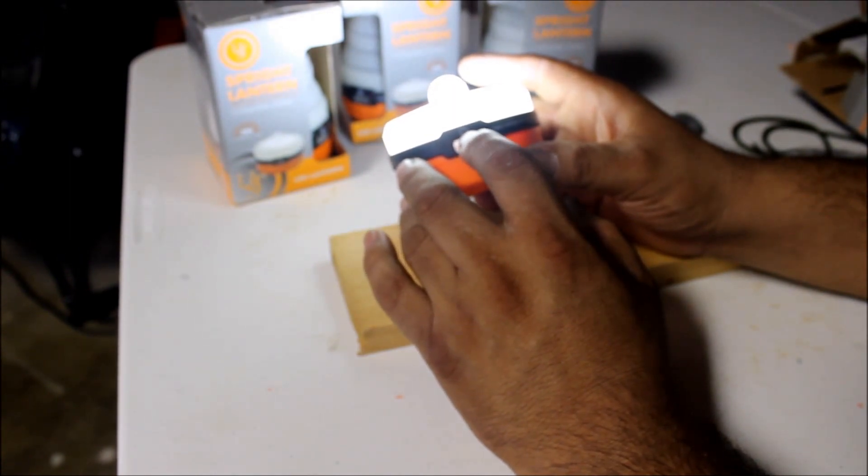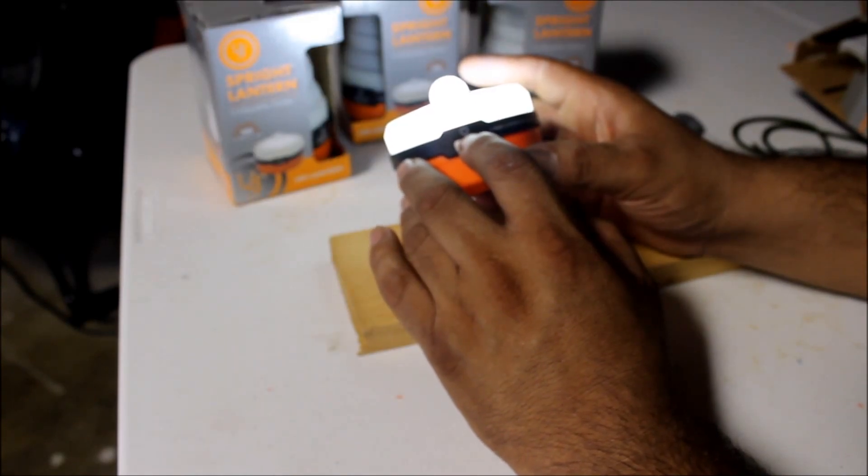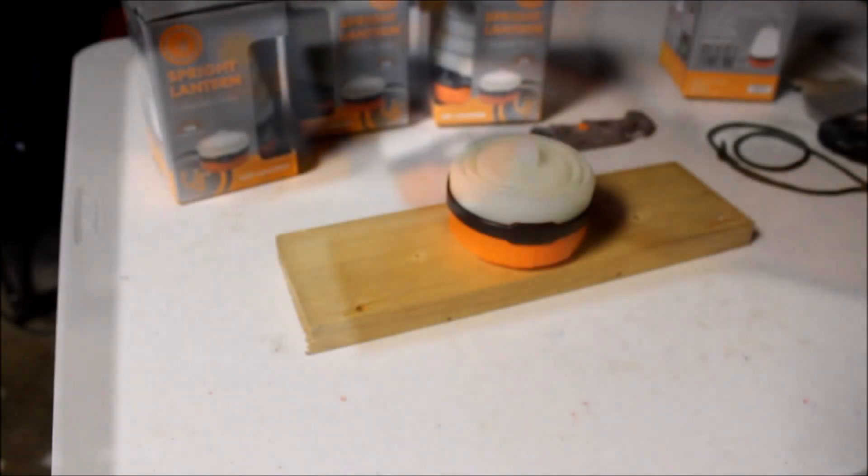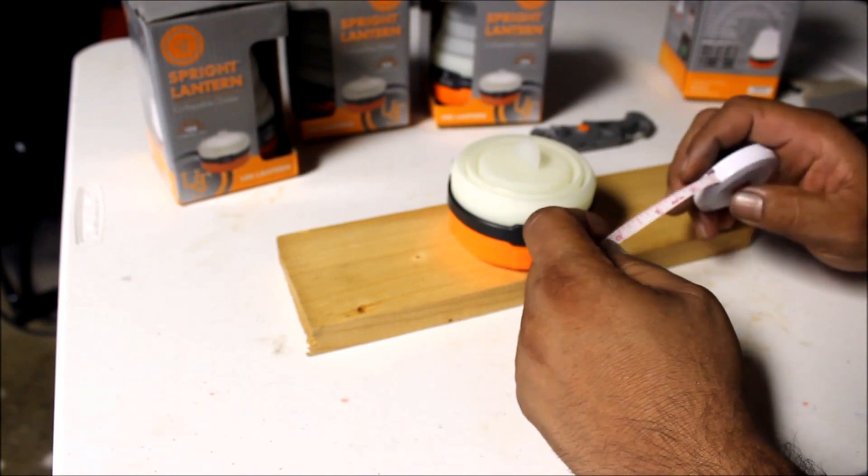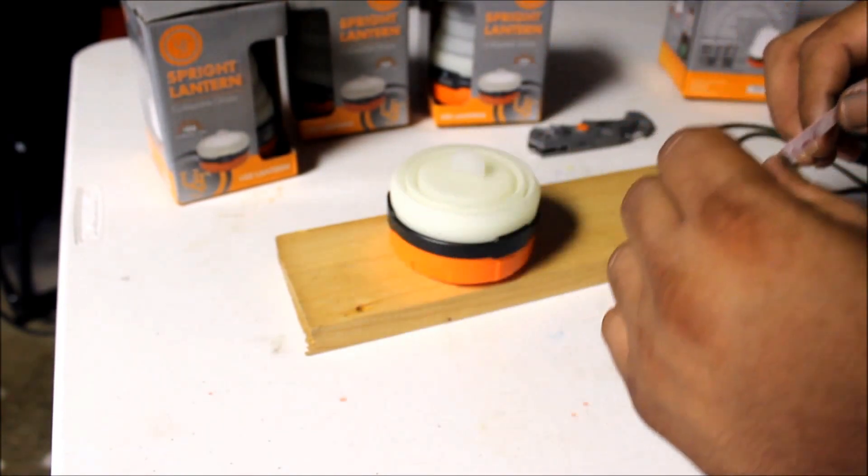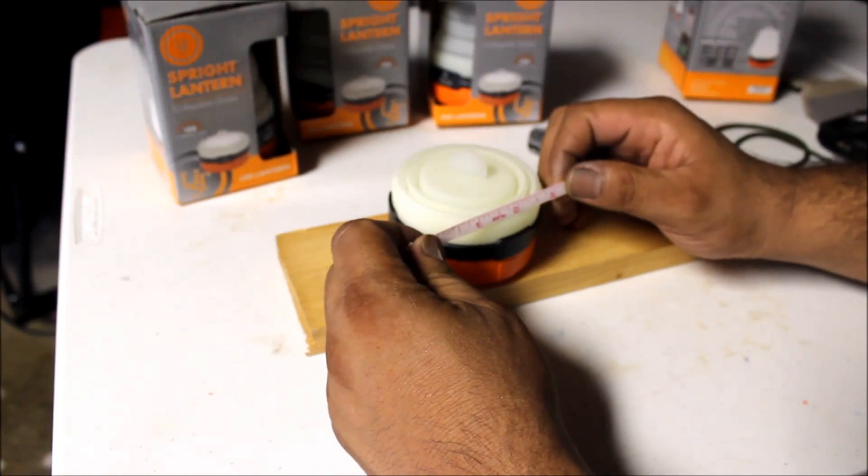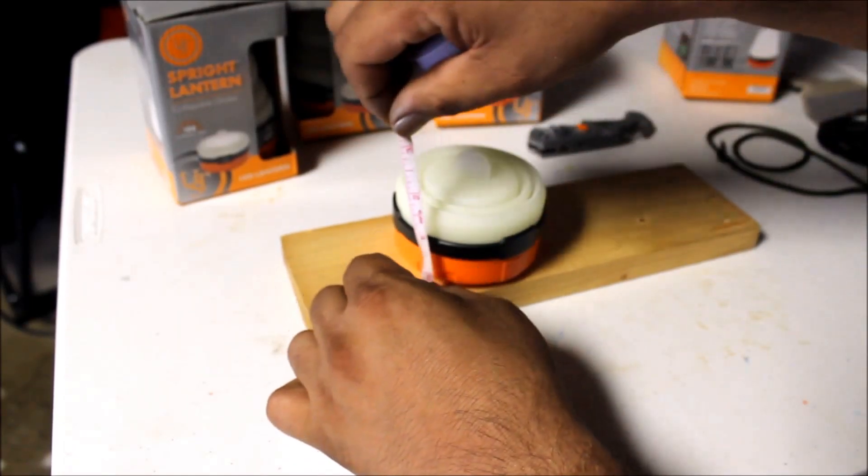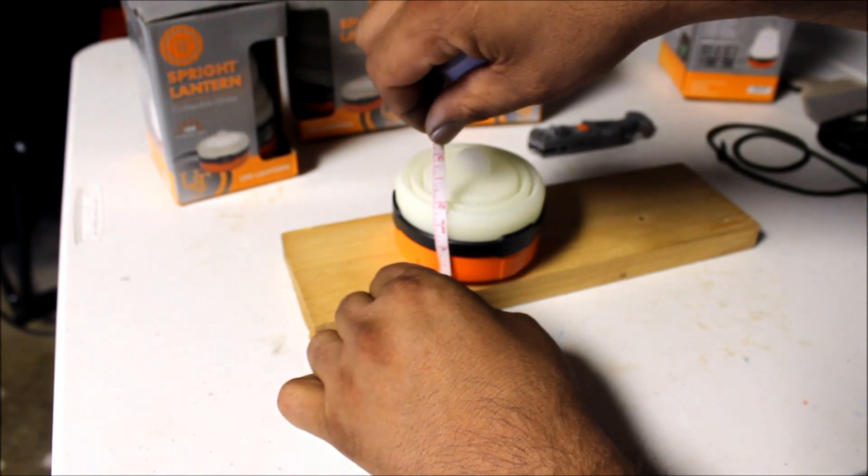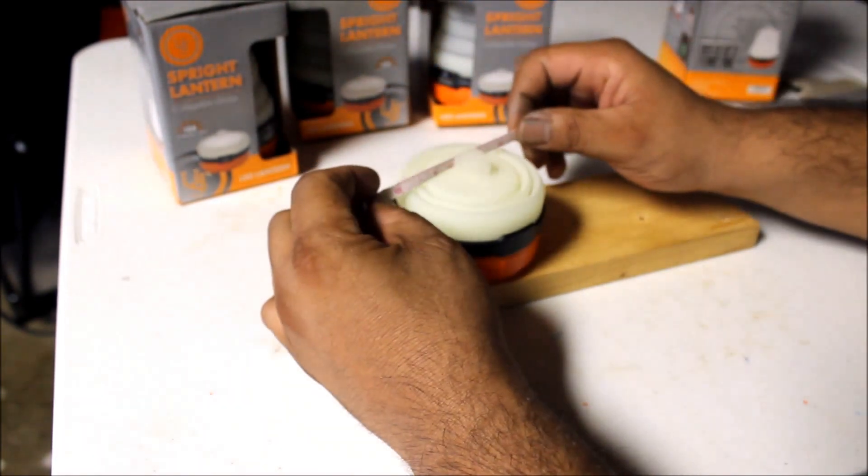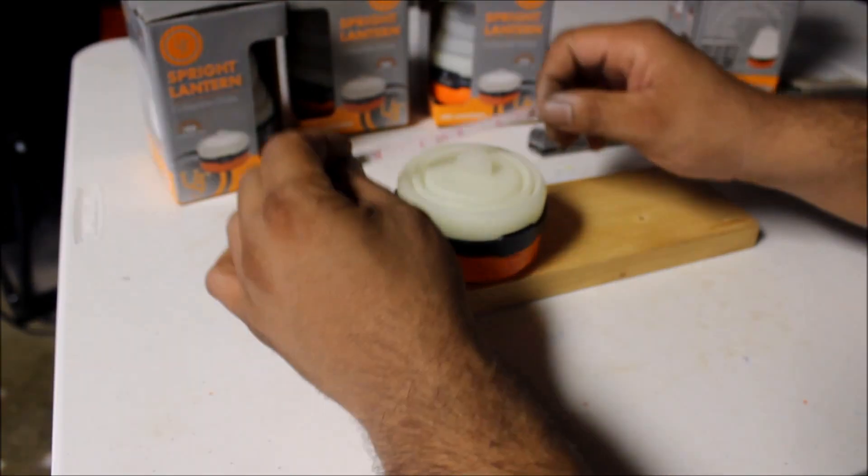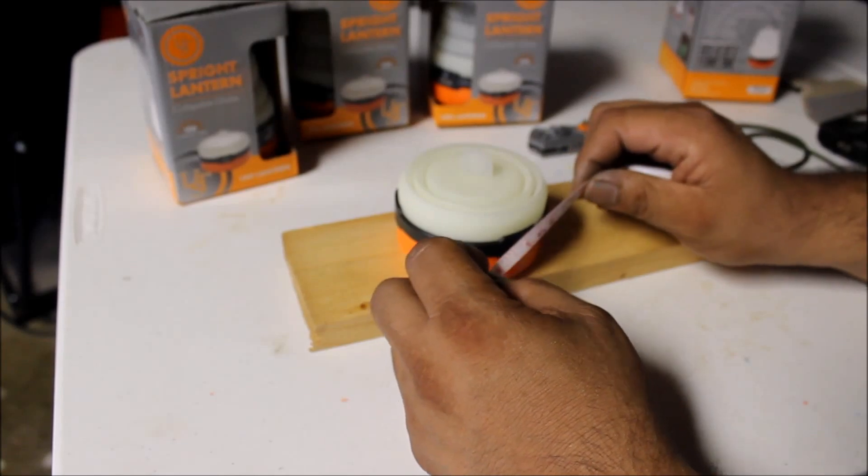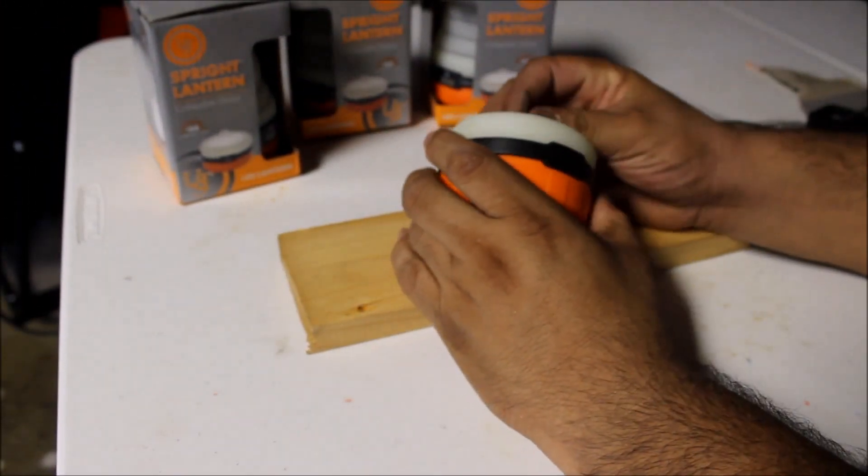And on the low setting, 50 lumens, 60 hours. I'm going to measure this little Spright Lantern to give you an idea of the dimensions. It sits around two inches tall and roughly about three and a quarter inches in diameter, which is pretty compact.